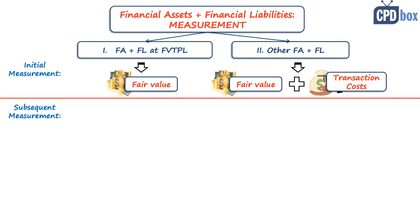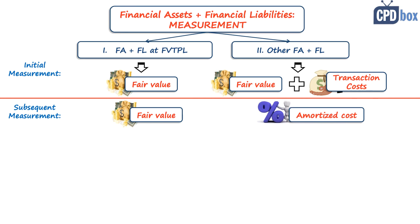What about subsequent measurement — after initial recognition? Subsequent measurement depends on the classification of the individual financial instrument, just like initial measurement. All financial instruments measured at fair value through profit or loss shall be subsequently remeasured to fair value at the date of remeasurement, and all other financial assets and liabilities shall be subsequently measured at amortized cost using the effective interest method.